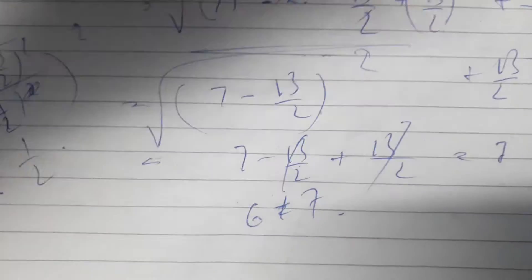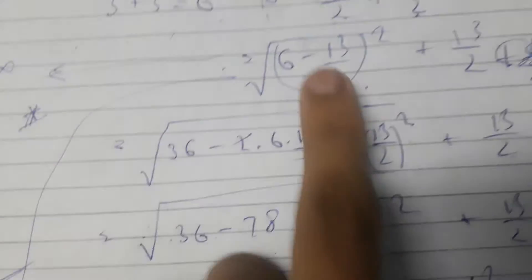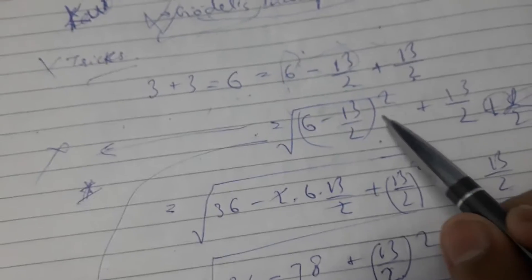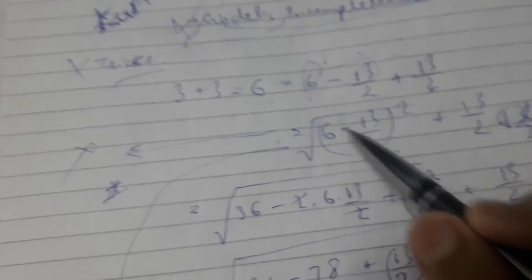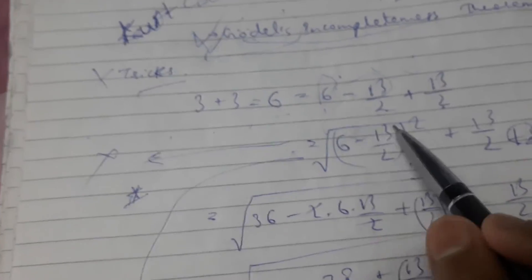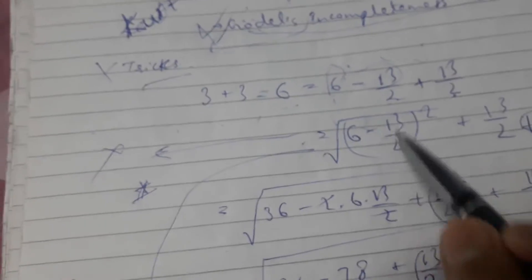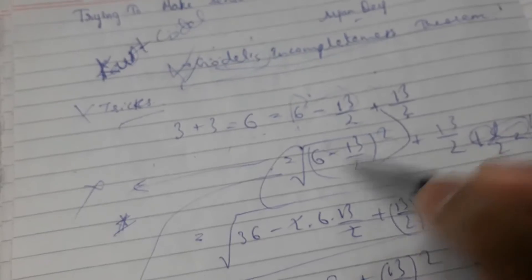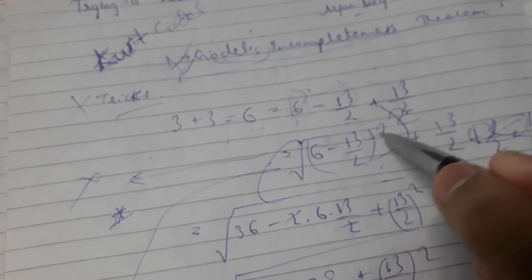But 6 does not equal 7. The reason this second step is wrong is that we cannot simply take a square root of a whole square like that — because the value under the root is actually negative. 6 minus 13/2 is negative 1/2, so the square root introduces ambiguity with plus or minus.